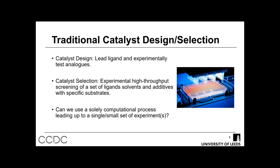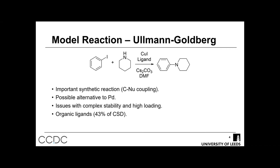Currently there are a few approaches to catalyst design. First is the design of new ligands, where you have a lead ligand and experimentally test different analogs by replacing different functional groups to find the one best suited to your reaction. The second is catalyst selection, more commonly used in process chemistry, where you try to find the optimal ligand or conditions through high throughput screening for a specific set of substrates. What I'm trying to develop is a solely computational process leading up to a small or single set of experiments, to reduce the time needed.